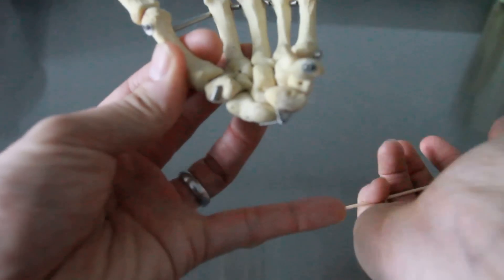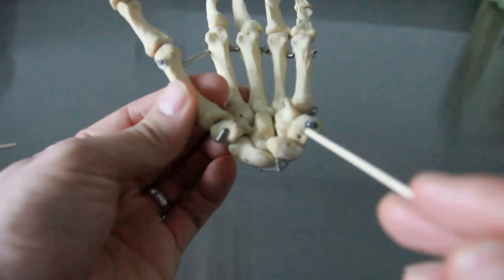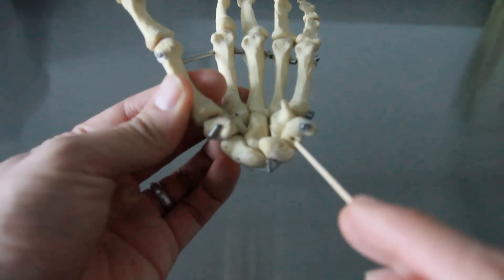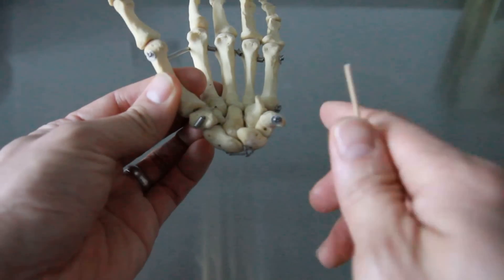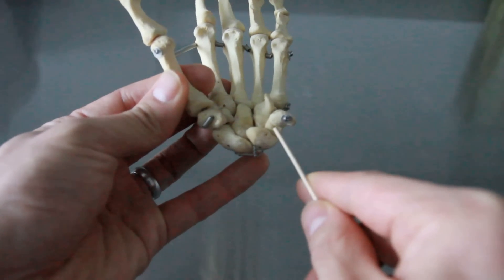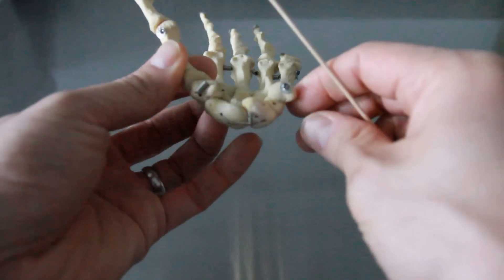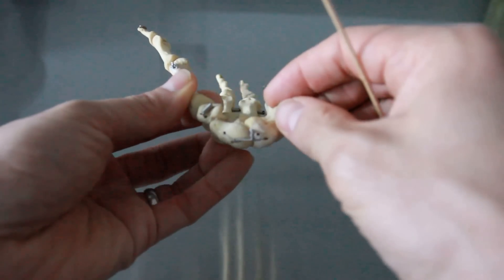So scaphoid, lunate, triquetrum, pisiform. That's those first four bones. You can see that the pisiform just kind of hangs off.